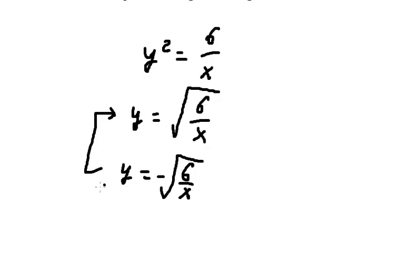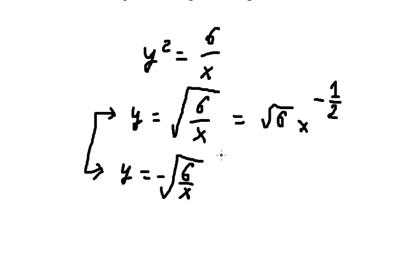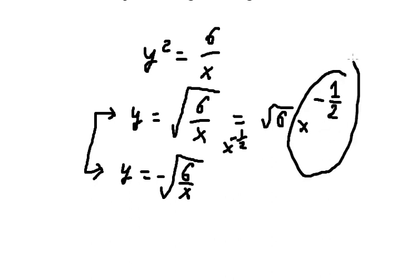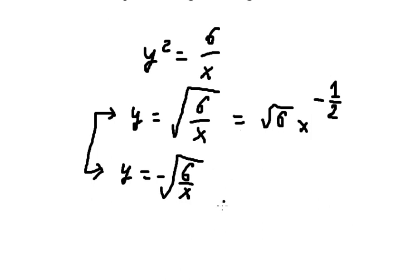So we need to find the first derivative. We know that we can write it like this — the square root of X is X to the power of 1 over 2. Now I want to put it on the numerator, so we put the negative exponent here. That's why we have this form.